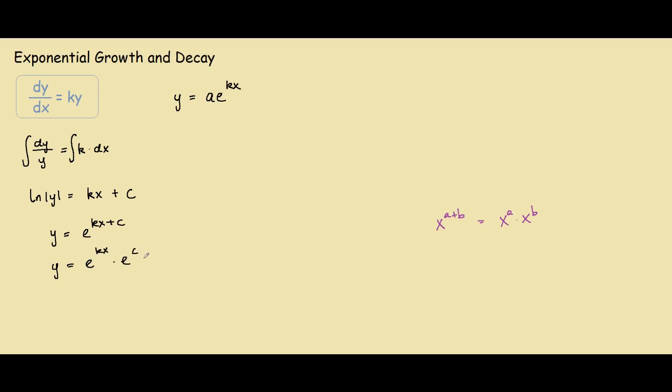And what we know about e to the power of c is that this is just a number, because e raised to some number is just some number. So we call this number a and we denote e to the power of c as a.